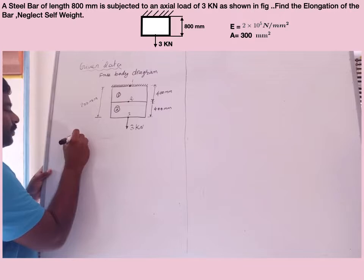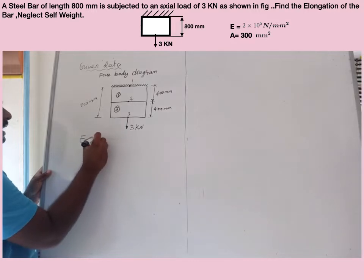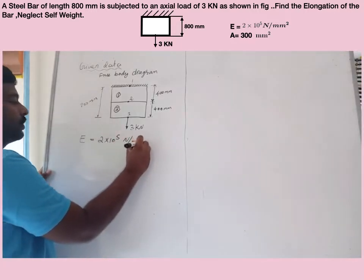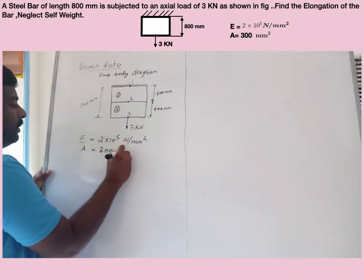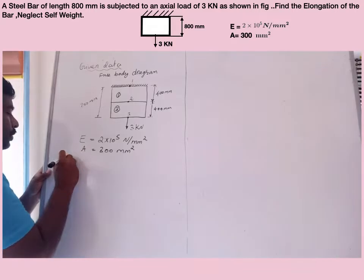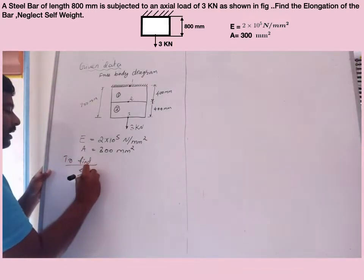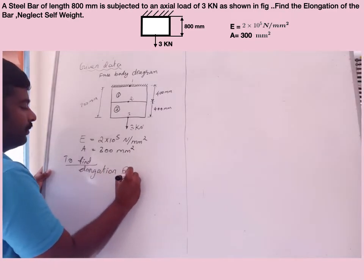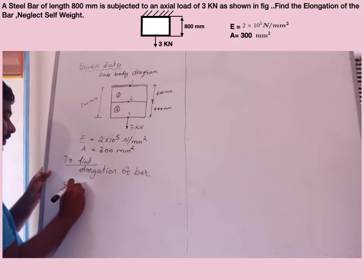The Young's modulus value is given as E equal to 2 into 10 raised to 5 Newton per mm square, and the area A equal to 300 mm square. We need to find the elongation of the bar.